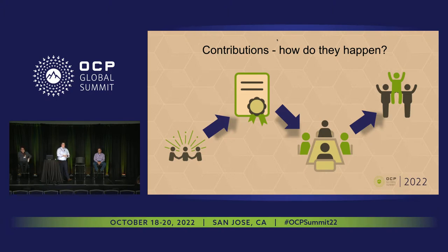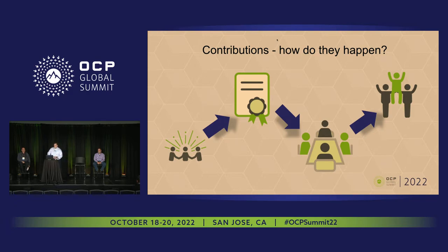Each top-level project has one representative on the IC, and then there are three co-chairs: Jeff Catlin, DJ Johnny, who you heard from during the keynotes today, and Jessica Goldbrand from Intel. Those folks review and then vote on each contribution to the OCP community. Once approved, the contribution is published on the OCP website, and we can then move forward with either utilizing that contribution as a guideline or basing products off that spec or design.